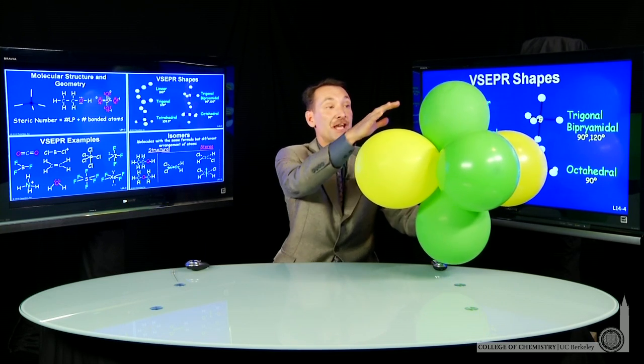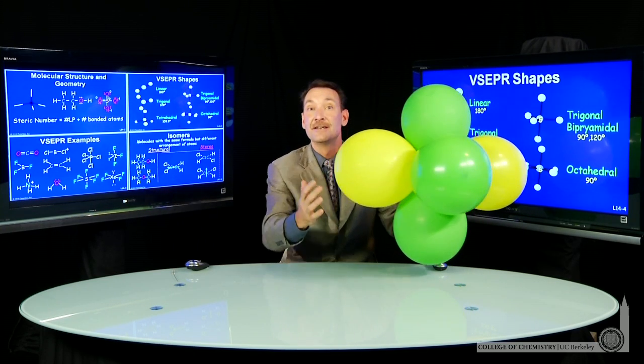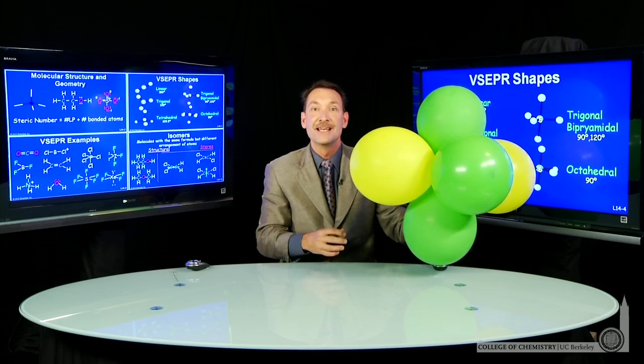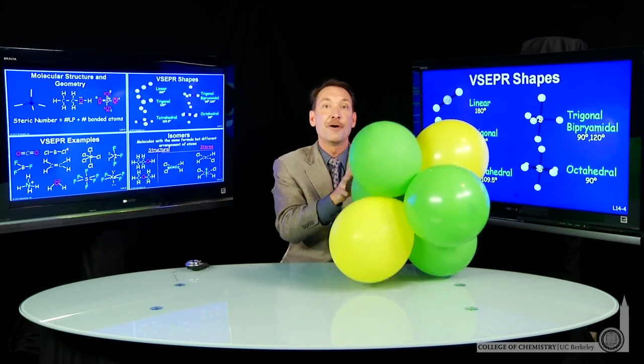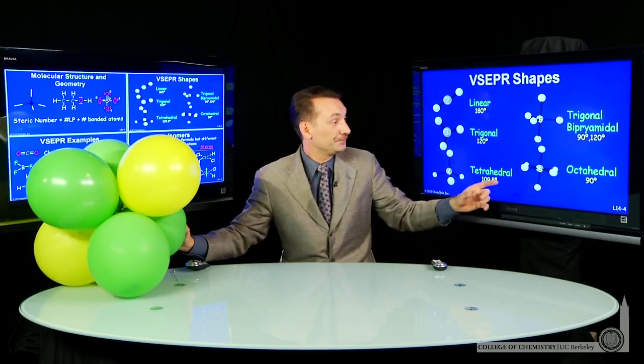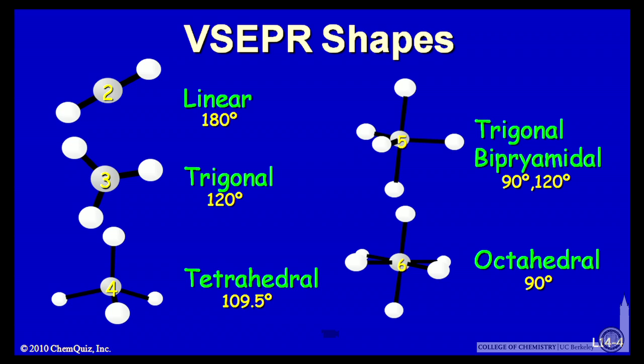An octahedral shape is six things arranged around a central point, six vertices. Now, it's called an octahedron because these six vertices form a shape with eight sides. So six things is an eight-sided figure. The octahedron is an arrangement of six things around a central point.